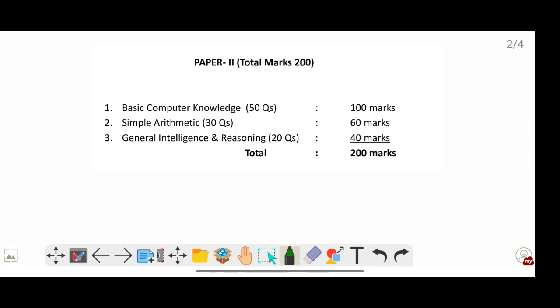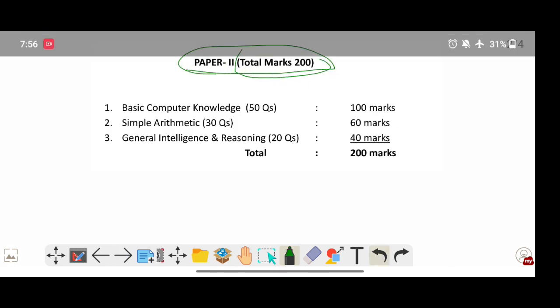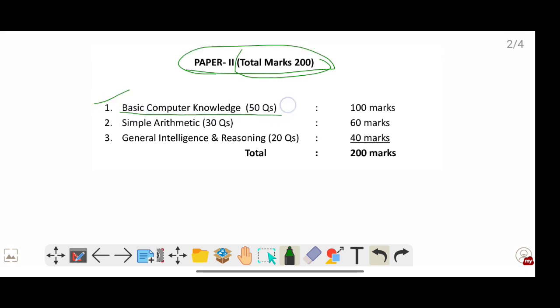Next paper, that is Paper 2. Total marks will be 200. The subjects are Basic Computer Knowledge, 50 questions, 100 marks. Simple Arithmetic, 30 questions, 60 marks. General Intelligence and Reasoning, 20 questions, 40 marks. Total will be 200. So for general category jobs, Paper 1 plus Paper 2, total will be 400 marks.